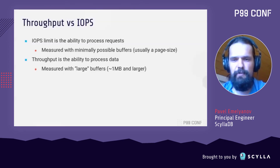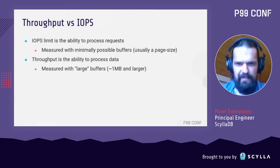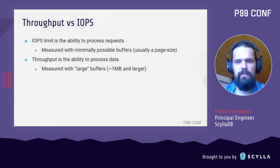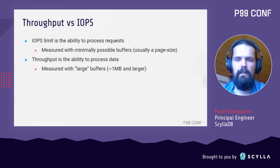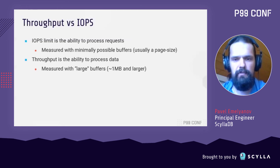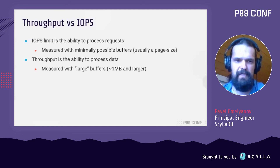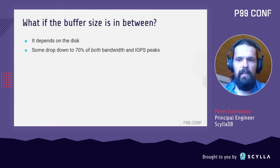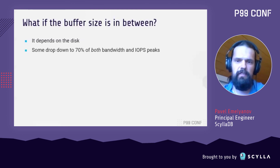Different SSD models handle requests of different sizes differently. Let's do a thought experiment. What if we load a disk with the smallest requests possible, say 1KB? In this case, the maximum number of requests processed by the disk will be limited by the ability of the disk and the bus to process the requests themselves. This limit is called IOPS. Now, what if we use the largest request possible — say a few megabytes in size? In this case, the maximum number of requests processed will be limited by the ability of the system to process data, not the requests themselves. This limit is called throughput.